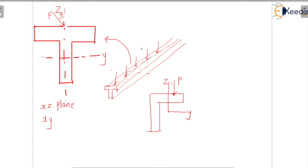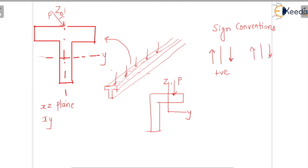This is the basic understanding about unsymmetrical bending. We can follow sign conventions — sagging is positive and hogging is negative — which will come into play when we solve problems. Students, this is the introduction to unsymmetrical bending. We will next cover moment of inertia, properties of beam cross sections, principal moment of inertia, and stresses in unsymmetrical bending. Thanks for listening to this class.